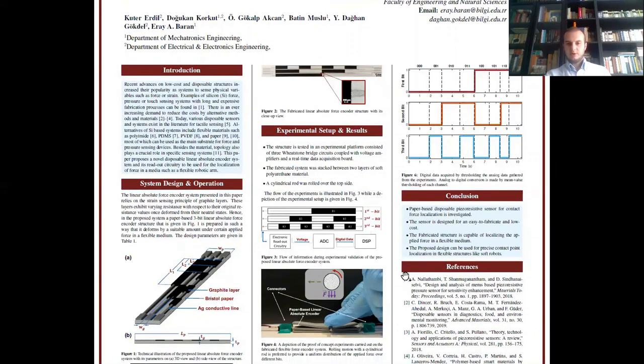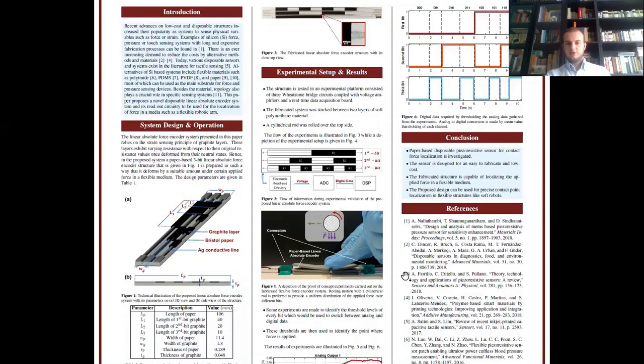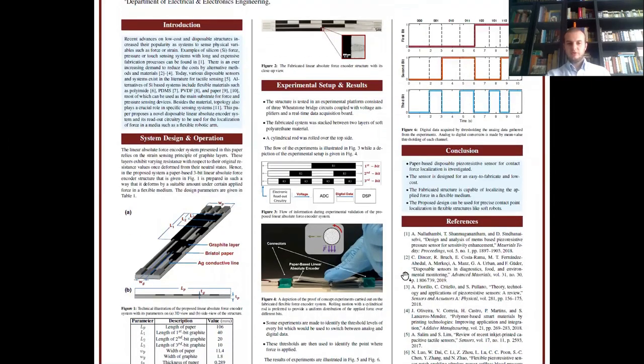In the experimental setup and results, you can see that in figure four, figure five and six. Firstly, an iron rod is rolled over the encoder structure. And as a result of this, the resistance change occurs on each bit where uniform and linear force is applied.